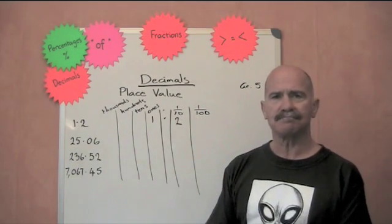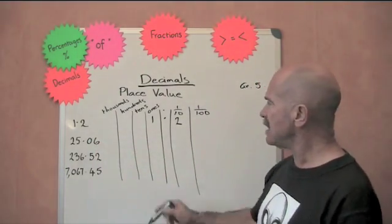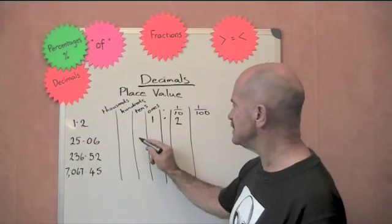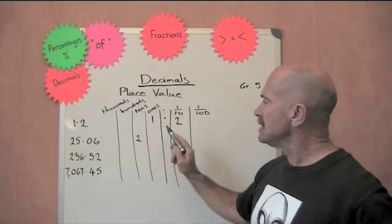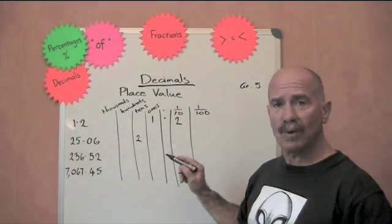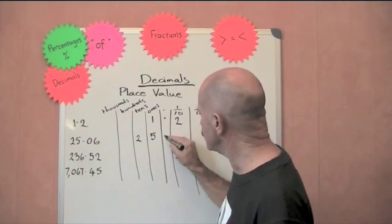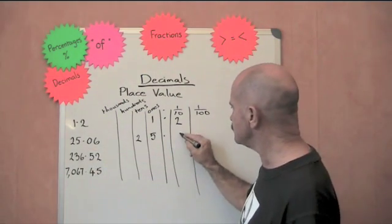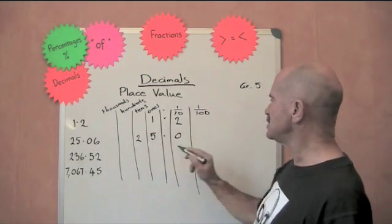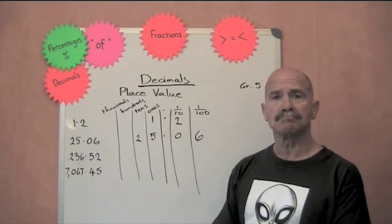That was easy. The next one I've got here is 25.06. Now, the 2 is a tens number. Whole numbers, aren't they? And the 5 is a ones number. Decimal point. There are no tenths. 0 means no tenths. And the 6 means six hundredths. Easy.